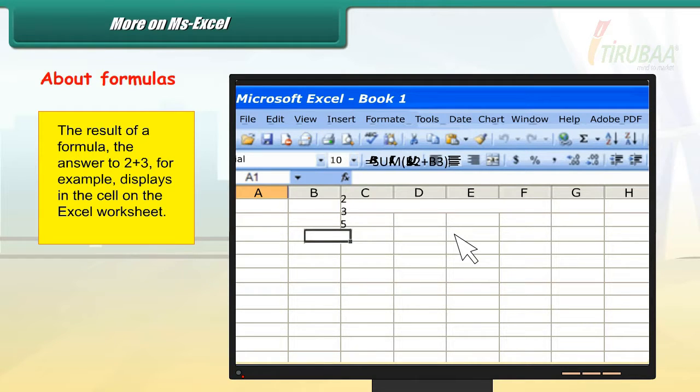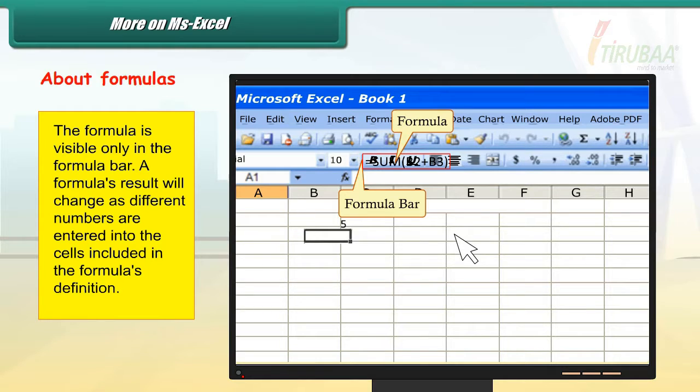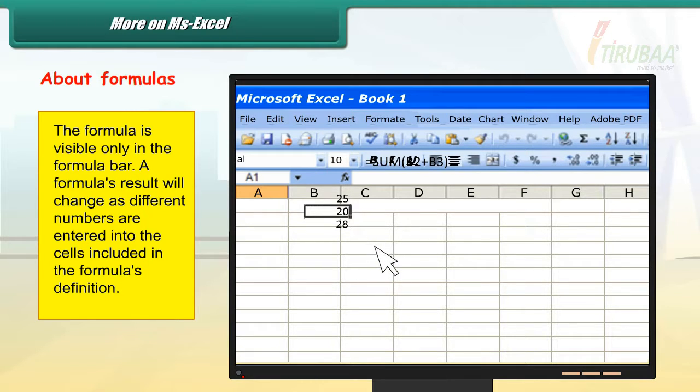The formula is visible only in the formula bar. A formula's result will change as different numbers are entered into the cells included in the formula's definition.